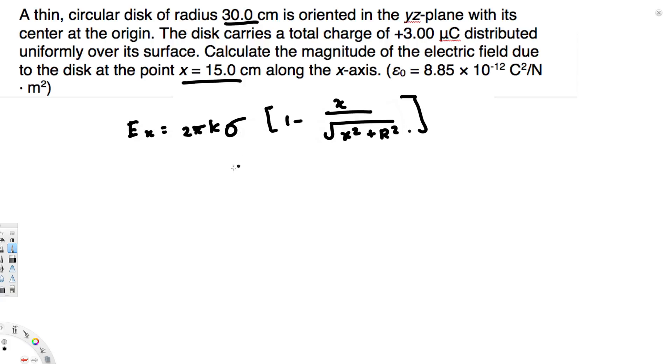Now we have to find the sigma value. To find this, we use the equation σ = Q/A. Here we're dealing with the area of the circle, and Q is the charge provided—3 microcoulombs.